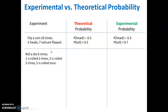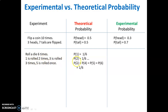Let's look at another example. We roll a die six times — again, a very small experiment. Our results are: one is rolled twice, three is rolled three times, five is rolled once. In theory, the probability of rolling a one is one out of six, the probability of rolling a two is also one out of six — all of these rolls have a one in six chance and are all equally likely.